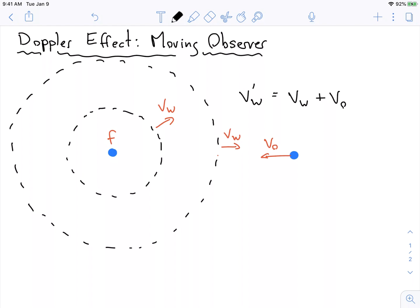So if we think about the frequency that this observer hears, the frequency is equal to this shifted velocity divided by lambda. The wavelength hasn't changed - what's just happened is the apparent velocity that this wave is now traveling at. So it's equal to v_w plus v_o over the wavelength.